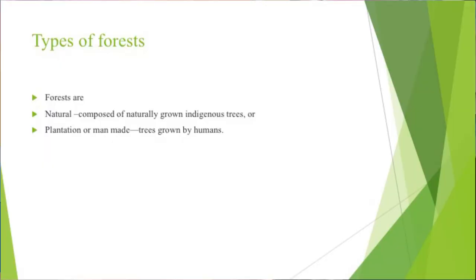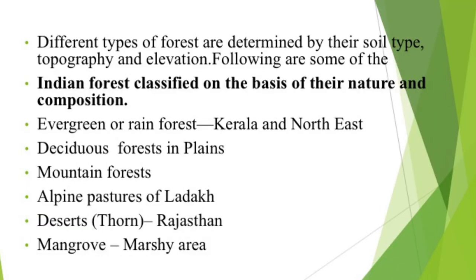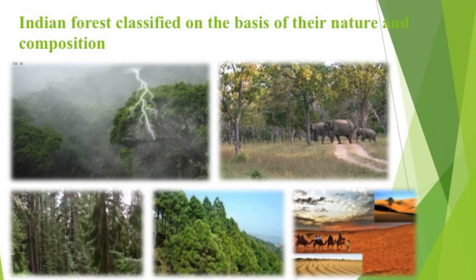Forests are either natural — composed of naturally grown indigenous trees — or plantation, which is man-made where trees are grown by humans. Different types of forests are determined by soil type, topography and elevation. Indian forests include evergreen or rainforests in Kerala and the northeast, deciduous forests in the plains, mountain forests, alpine forests of Ladakh, thorn or desert forests as in Rajasthan, and mangrove forests in marshy areas.